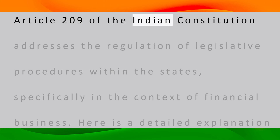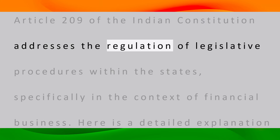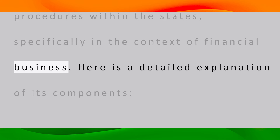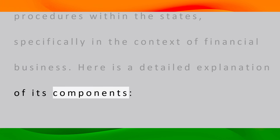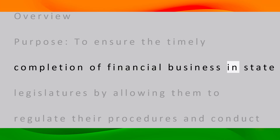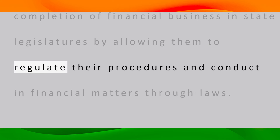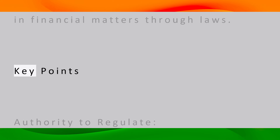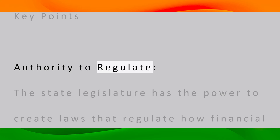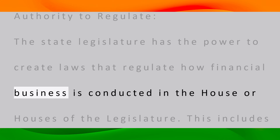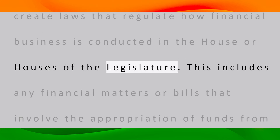Article 209 of the Indian Constitution addresses the regulation of legislative procedures within the states, specifically in the context of financial business. Its purpose is to ensure the timely completion of financial business in state legislatures by allowing them to regulate their procedures and conduct in financial matters through laws. The state legislature has the power to create laws that regulate how financial business is conducted in the house or houses of the legislature.